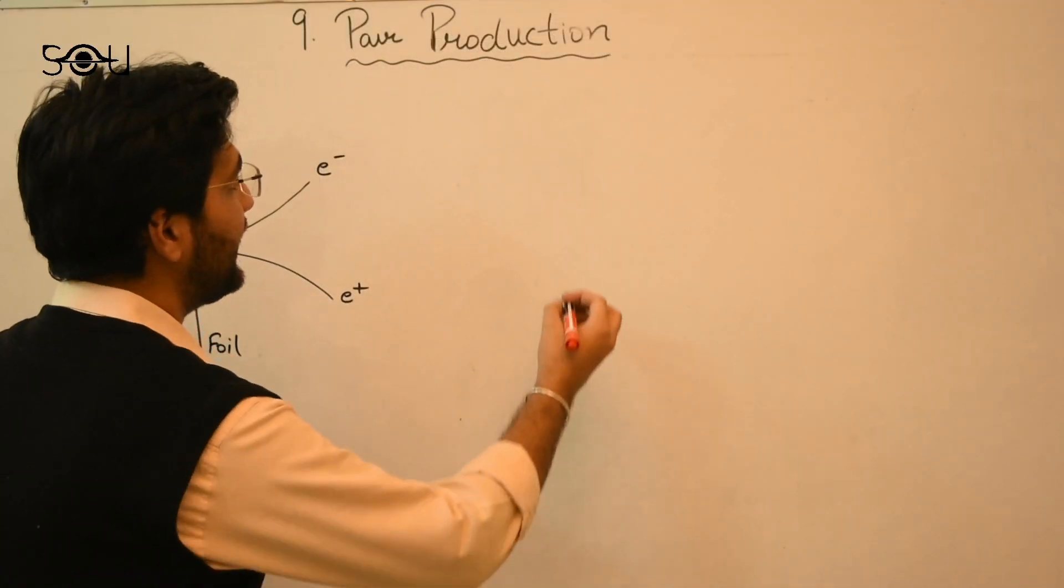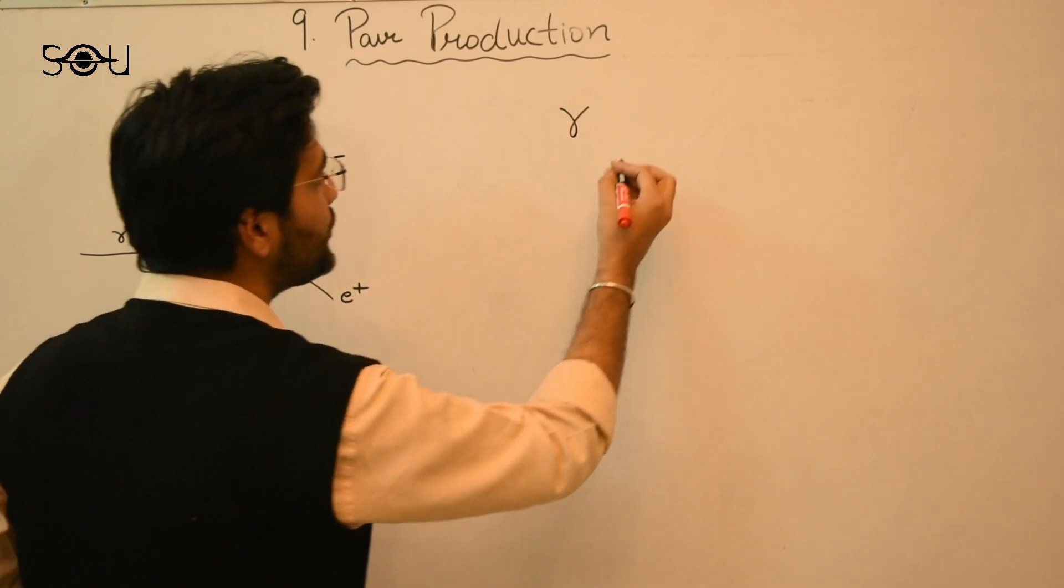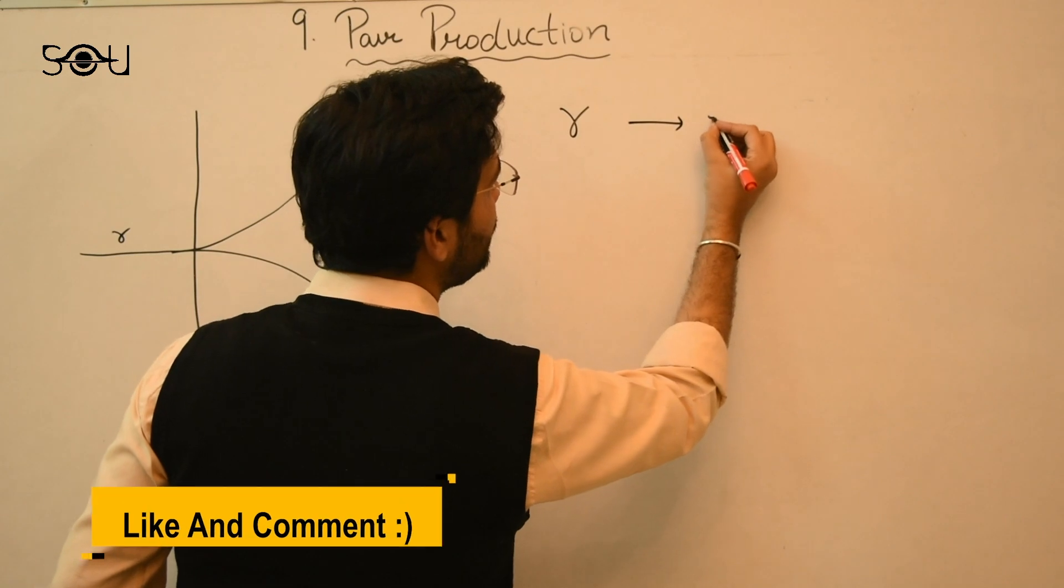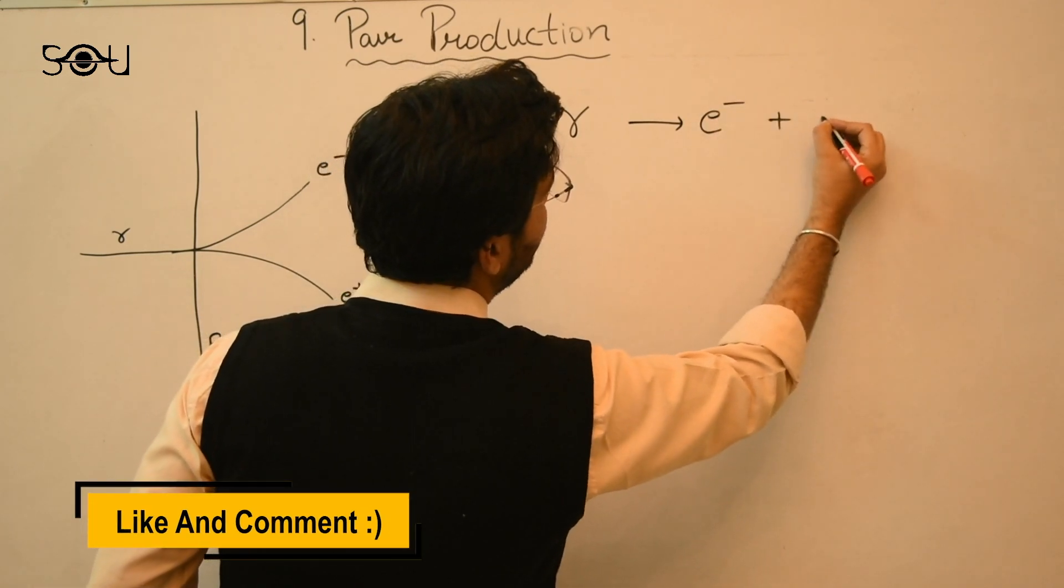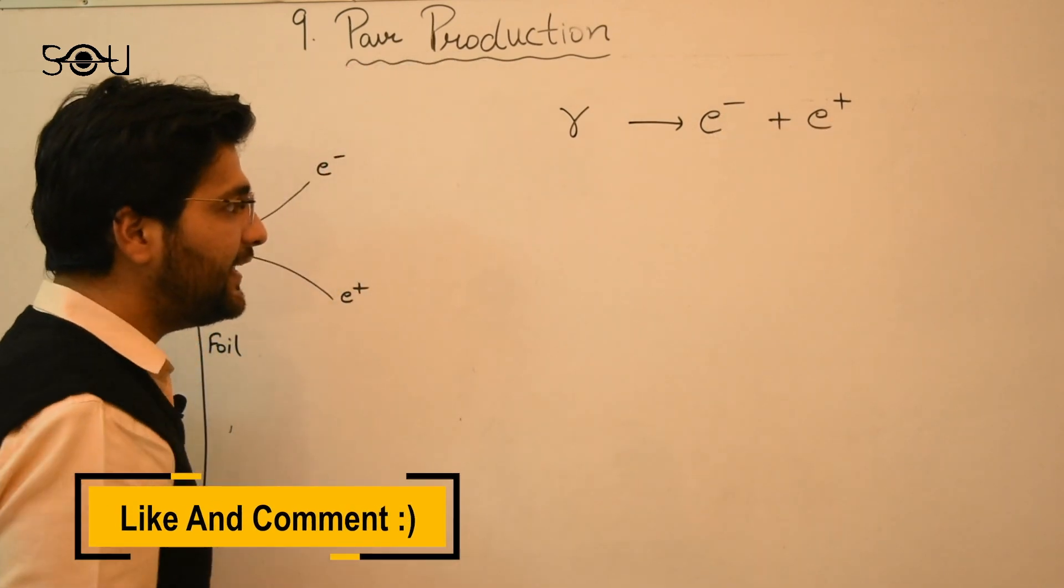So in this very case, we can write the equation of interaction as gamma which is the gamma ray photon that we are using. It disappears into an electron and a positron which is the antimatter counterpart of the electron.